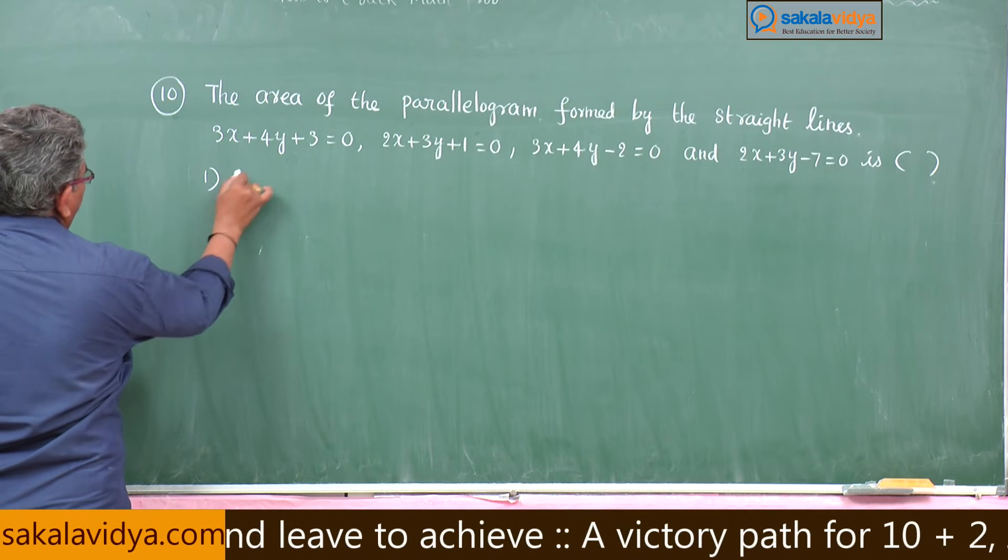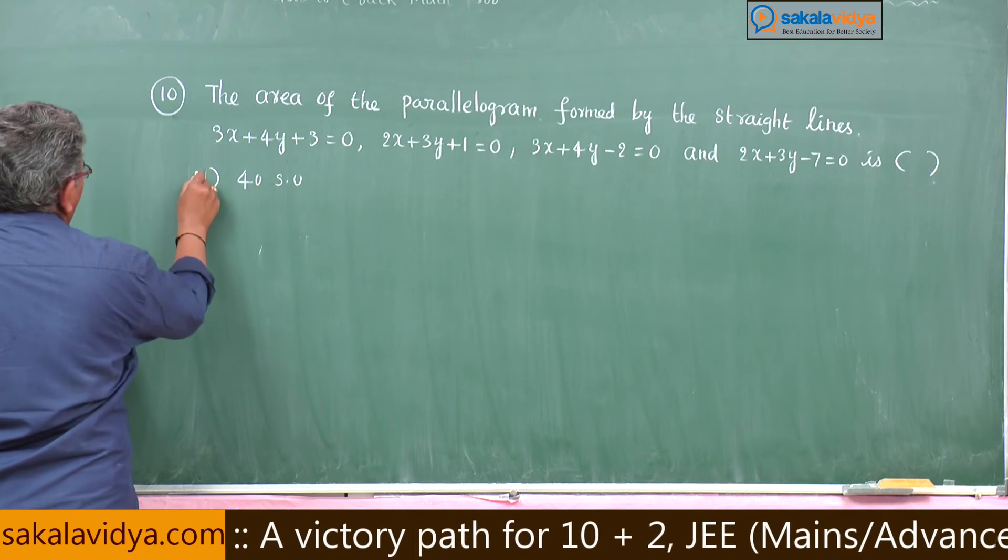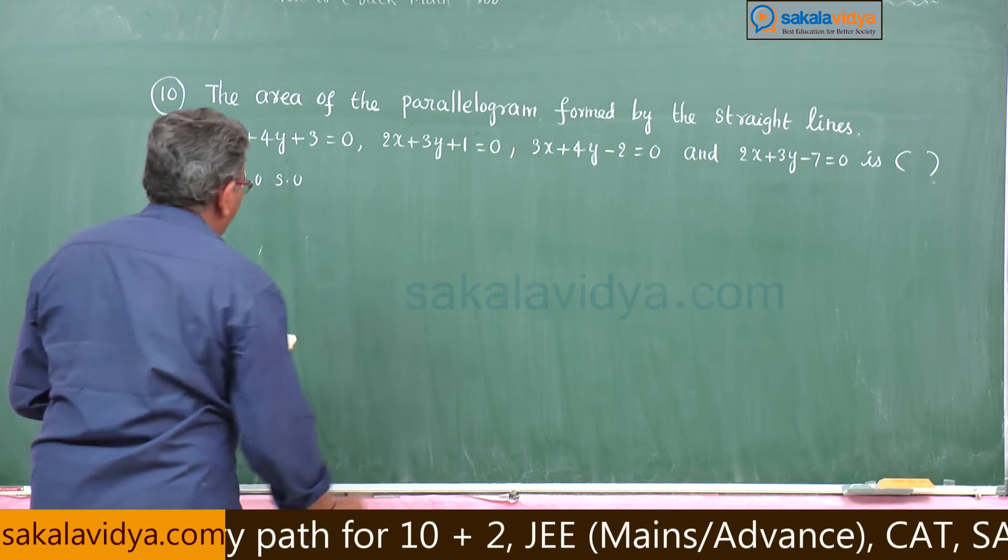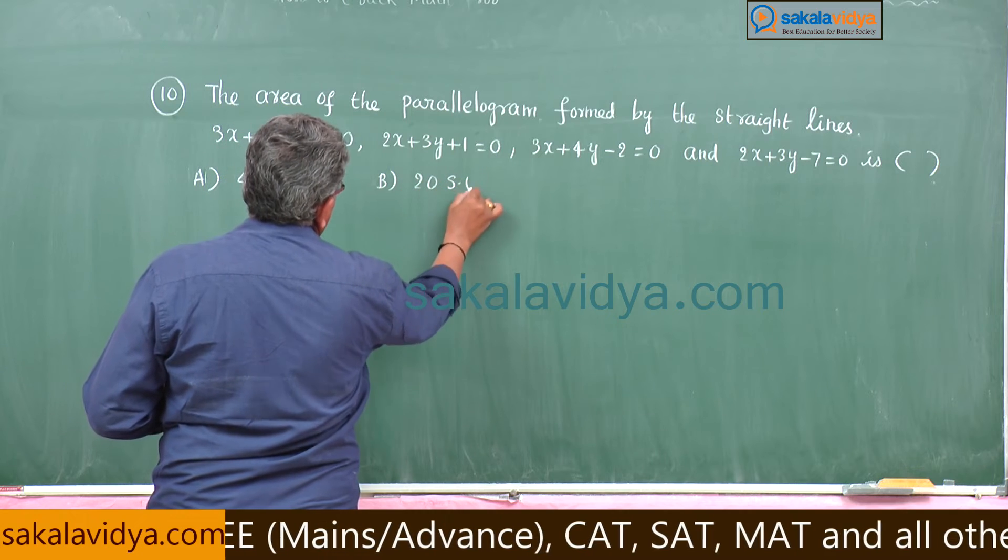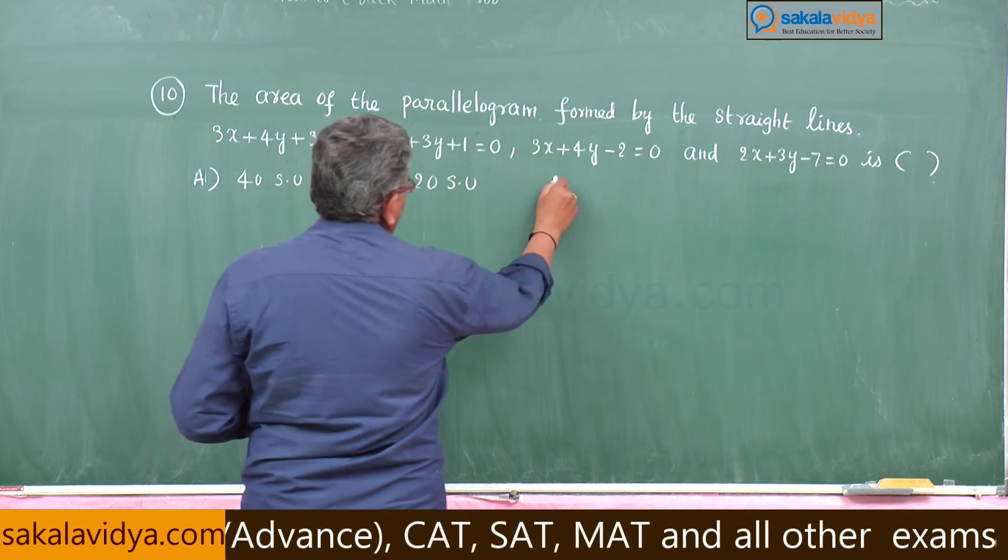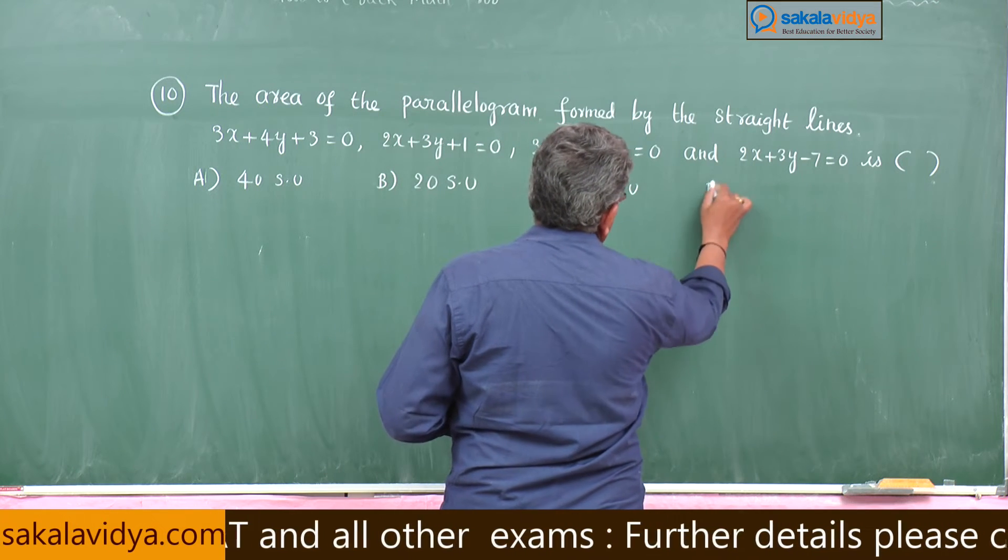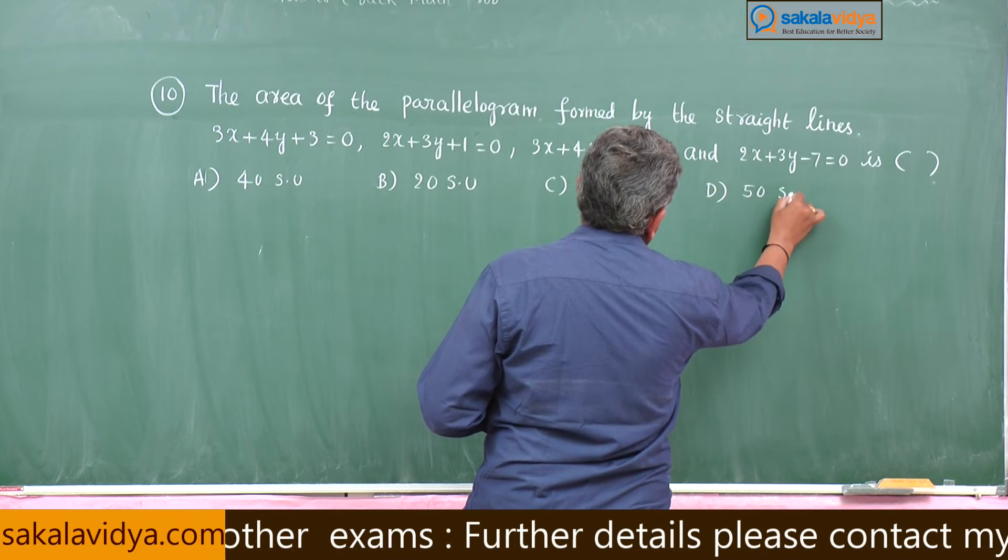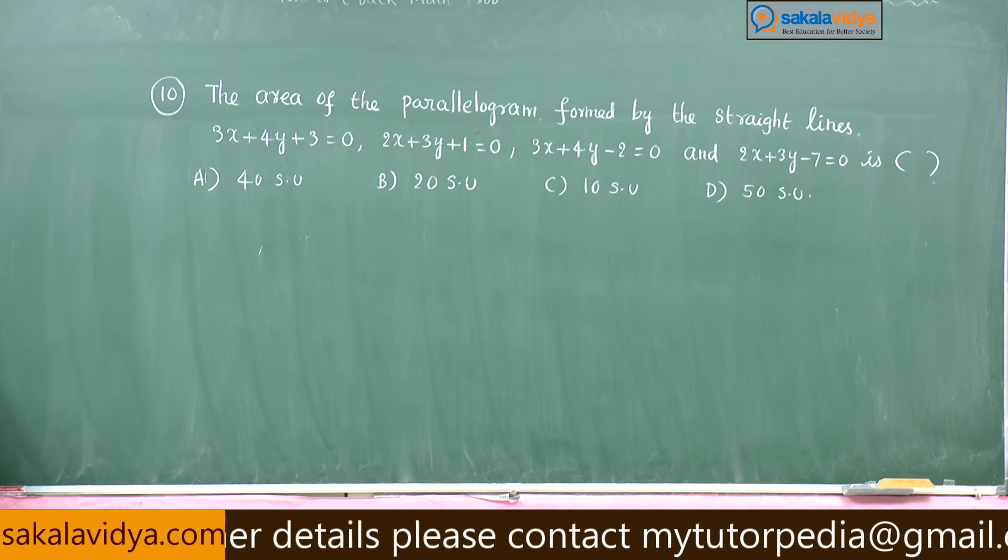First option: a) 40 square units, b) 20 square units, c) 10 square units, d) 50 square units.